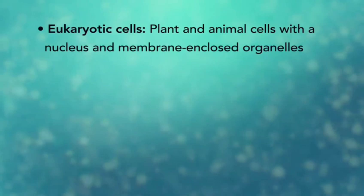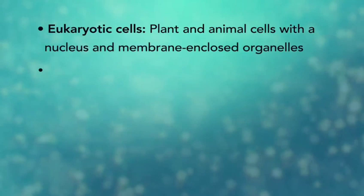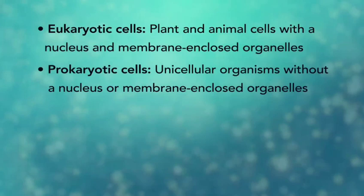In summary, remember, eukaryotic cells are plant and animal cells with a nucleus and membrane-enclosed organelles, while prokaryotic cells are unicellular organisms without these things.